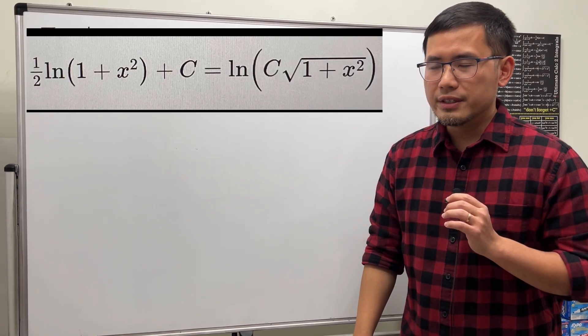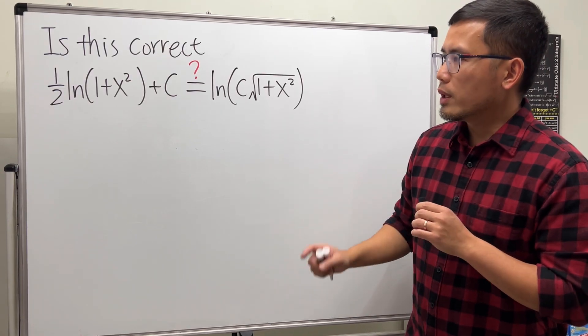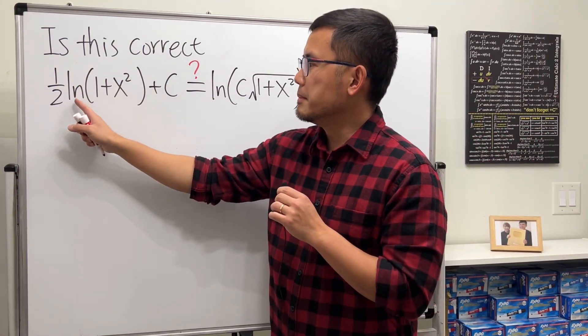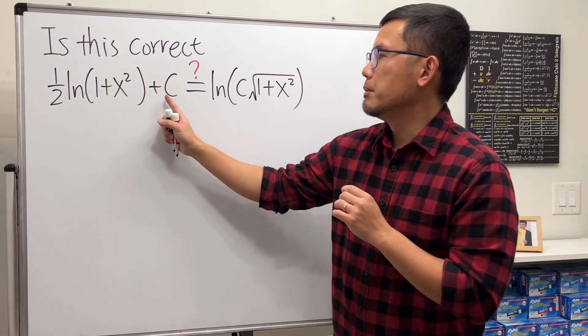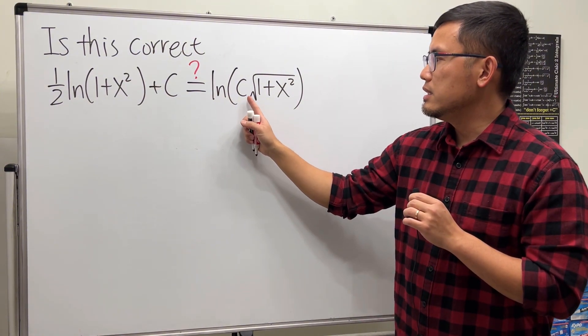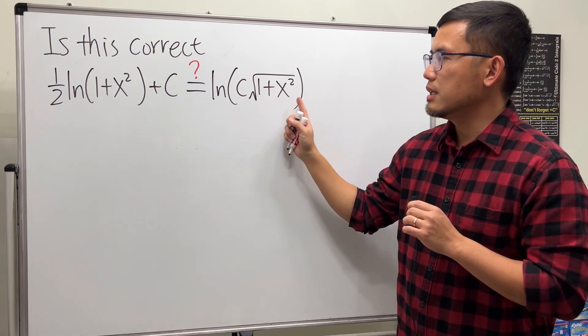Okay, another question from Reddit. We would like to know if one half times ln of one plus x squared plus c is equal to ln of c times the square root of one plus x squared. Is this correct?